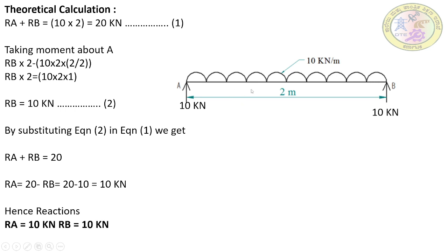To find RA and RB, we first determine the total load acting on the beam. We have only one load — the UDL with intensity 10 kN/m over a length of 2 meters. So the total load is 10 × 2 = 20 kilonewtons, shared by reactions RA and RB. Taking moments at A: we have the reaction RB with a moment arm of 2 meters (positive), and the UDL load (negative). The UDL moment formula is W × L × (L/2).